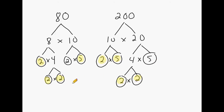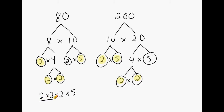Once you have identified all the common prime factors between 80 and 200, you take one side of the shaded factors and list those factors. We have three 2's that we shaded along with a 5, and you multiply those numbers together — the result will be the greatest common factor of 80 and 200. 2 times 2 gives us 4, and 2 times 5 gives us 10. Multiplying 4 times 10 gives us the greatest common factor of 40. It does not matter which side you multiply the shaded numbers from, since they are identical on both sides.